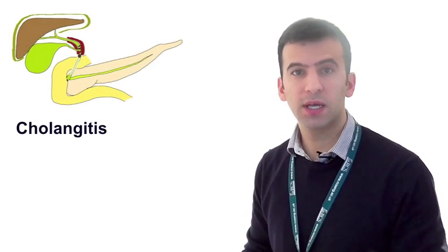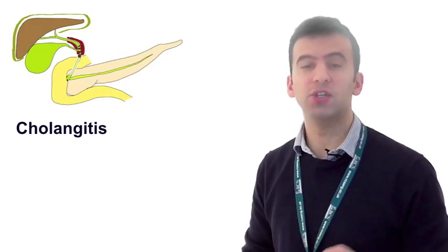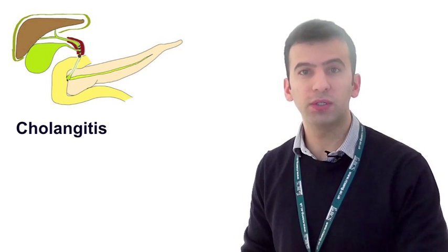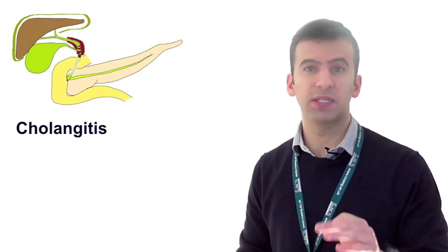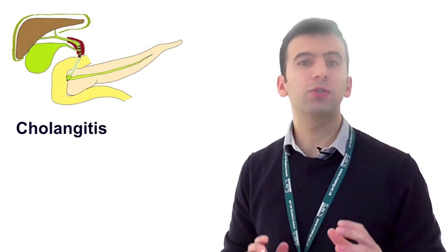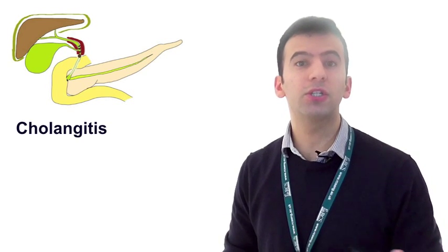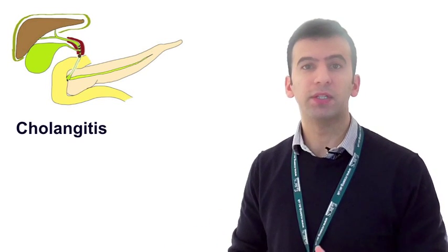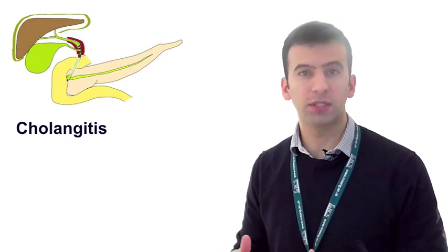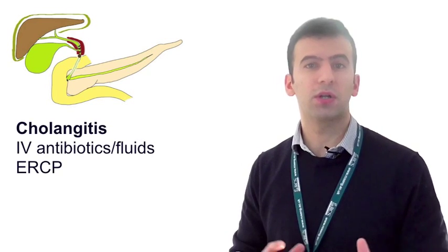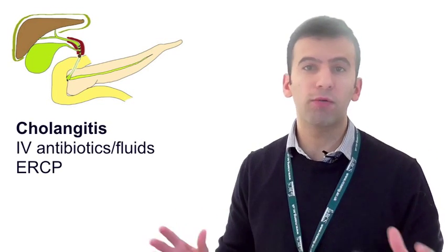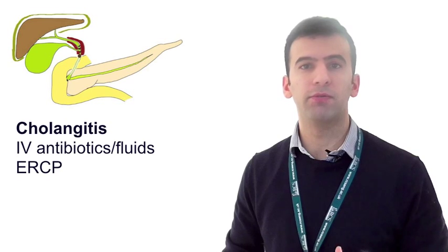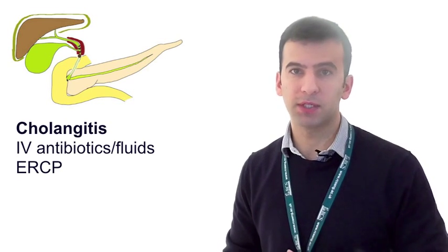Ascending cholangitis, now the key thing to remember here is Charcot's triad. Pain, fever, and jaundice equals ascending cholangitis until proven otherwise. Now, bloods will show elevated bilirubin in addition to inflammatory markers. Ultrasound scan will not only show gallstones, but a dilated biliary tree and common bile ducts. IV antibiotics and IV fluids is essential to these patients with all the gram-negative bugs and anaerobes in the biliary tree can become profoundly septic.